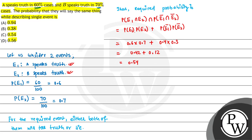So the final answer is 0.54, which is option C. Hope you understood it well. Best of luck.